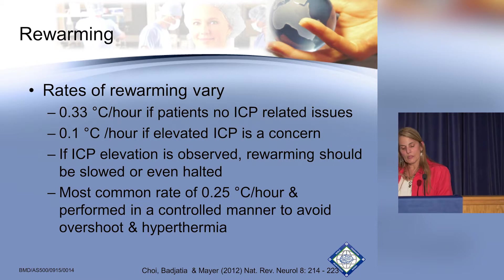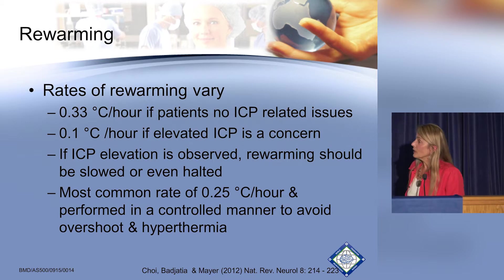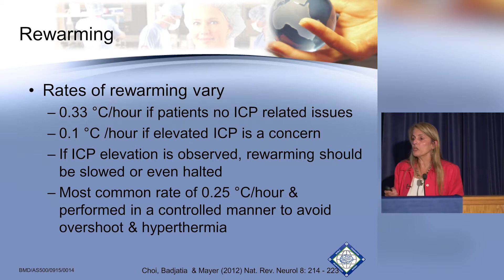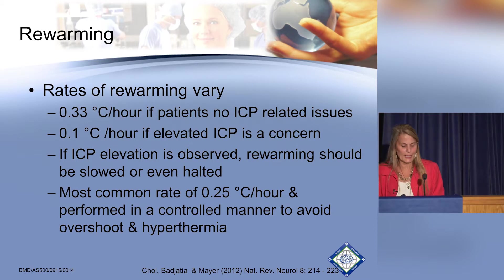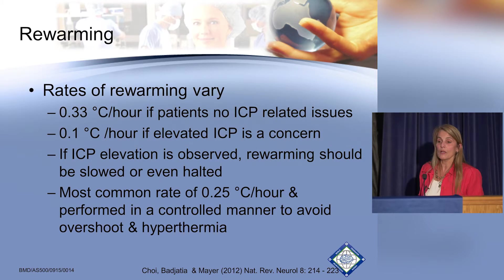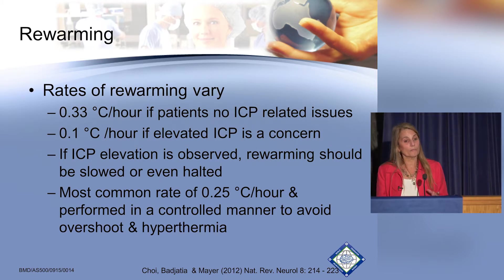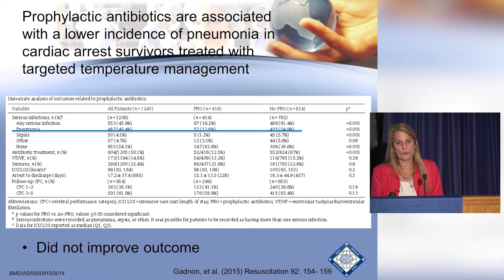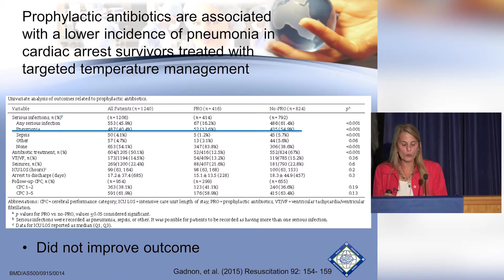Looking at rewarming rates, there's a wide range — about a third of a degree centigrade per hour is fairly aggressive if there are no ICP issues. But as soon as ICP problems arise from vasodilation, we have to slow the rewarming or stop it altogether and try again in 12 to 24 hours. We definitely don't want hyperthermia — normothermia is the goal.